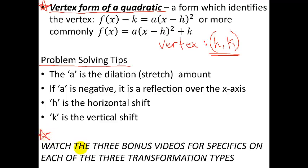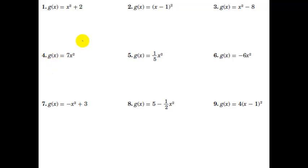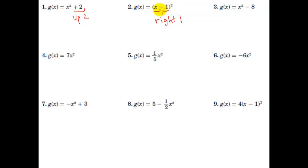There are three bonus videos assigned in class that will help clear up any confusion, since they take each of the three topics and break it down individually. Now let's do examples — we don't have to graph them, just identify what change occurred. The first is x² + 2, which means up 2. The second is (x − 1)², meaning to the right by 1, because with a minus sign we go right — solving x − 1 = 0 gives x = 1.